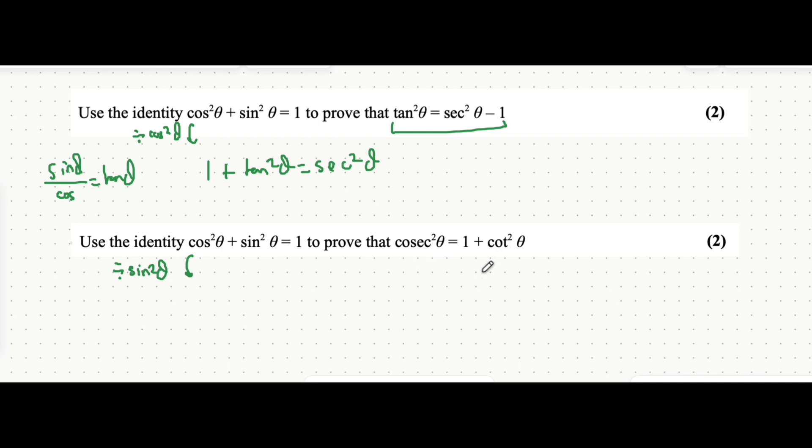So cos squared over sin squared—well, you might have realized that's like the reciprocal of tan theta all squared. So we can write that as 1 over tan squared theta or cot squared theta. Sin squared over sin squared is just going to be 1, and then 1 divided by sin squared is going to be cosec squared theta.